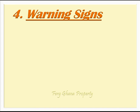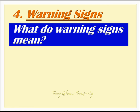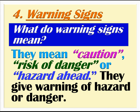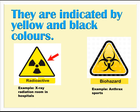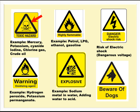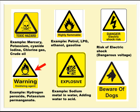Warning signs: What do warning signs mean? They mean caution, risk of danger, or hazard ahead. They give warning of hazard or danger. They are indicated by yellow and black colors. Examples: Radioactive – e.g., X-ray radiation room in hospitals. Biohazard – e.g., Anthrax spores. Toxic – e.g., Mercury, Potassium Cyanide, Iodine, Chlorine gas, Crude oil. Highly flammable – e.g., Petrol, LPG, Ethanol, Gasoline. Risk of electric shock / Dangerous voltage. Oxidizing – e.g., Hydrogen peroxide, Potassium permanganate. Explosive – e.g., Sodium metal in water, adding water to acid.